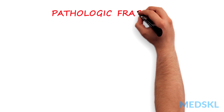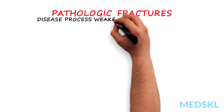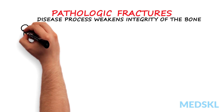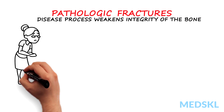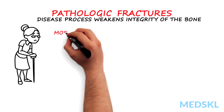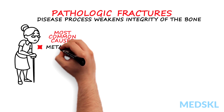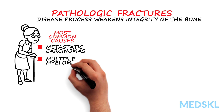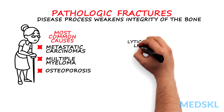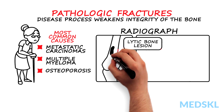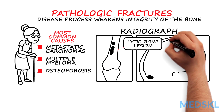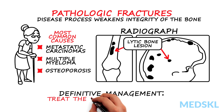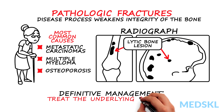Pathologic fractures occur when a disease process has weakened the integrity of the bone and usually require little or no trauma. Most common causes include metastatic carcinomas, multiple myeloma, or osteoporosis. Radiographs may demonstrate a lytic bone lesion at the fracture site. Definitive management involves treatment of the underlying condition.